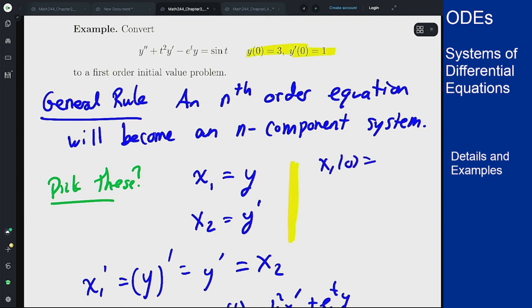...that x1 of 0 should be 3, and x2 of 0 should be 1, or the vector x at 0 should be 3 and 1.